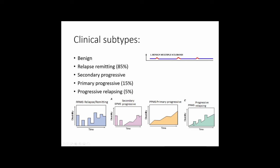In progressive relapsing MS, the disease worsens over time with discrete episodes that partially recover. In primary progressive MS, the disease process worsens over time and may fluctuate in severity with sudden increases — this is the key difference between progressive relapsing and primary progressive.